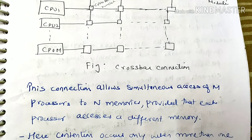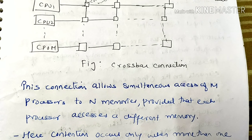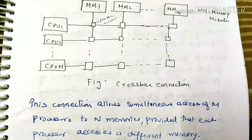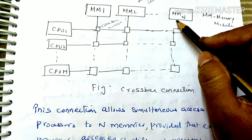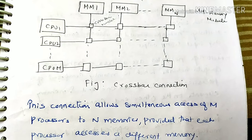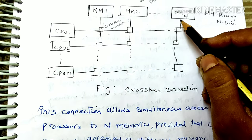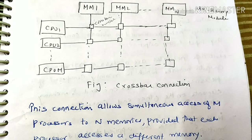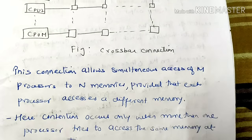This connection allows simultaneous access of m processes to n memories, provided that each processor accesses a different memory. Multiple processes can access multiple different memories at a time. Different memories must be accessed because two CPUs cannot use the same memory module simultaneously — this would cause a conflict. Every processor can communicate with each other, increasing transmission speed.